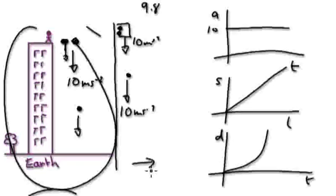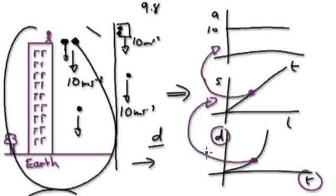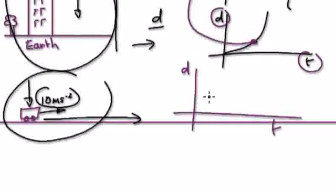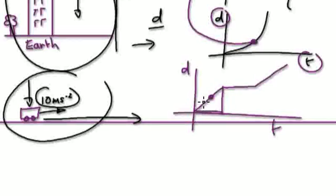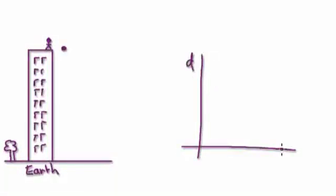So the acceleration-time graph, speed-time graph, and distance-time graph will look the same in both scenarios. Now, when you're given a distance-time graph, you can find the speed by finding the gradient. If you're given the speed-time graph, working out the gradient represents the acceleration. If you're given the distance-time graph, finding the gradient represents the speed.